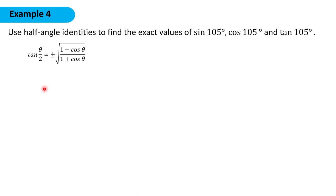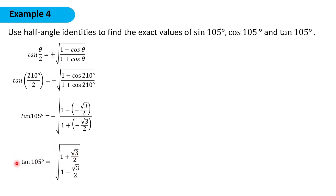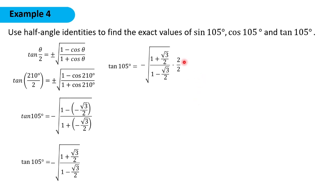For tangent 105°, we use the half-angle tangent formula with θ equal to 210°. Cosine 210° is negative √3/2, and tangent is negative in the second quadrant, so we take the negative square root. Negative times negative gives positive in the numerator, and positive times negative gives a negative in the denominator. Multiplying by 2/2, we get 2 plus √3 in the numerator and 2 minus √3 in the denominator. That is tangent 105°.